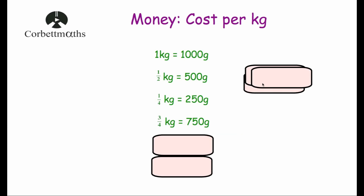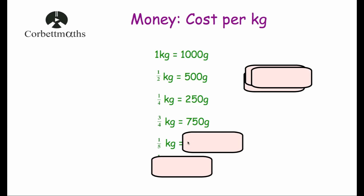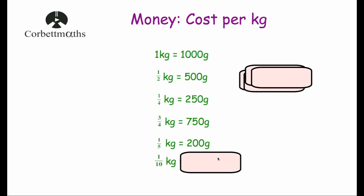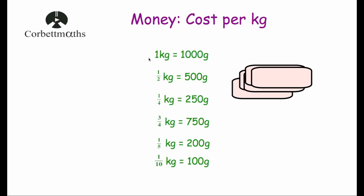Three quarters of a kilogram is 750 grams, which can be very useful. A fifth of a kilogram is 200 grams — a fifth of a thousand is 200. And a tenth of a kilogram is 100 grams. These facts are very useful in non-calculator questions, or even when you're in a shop and want to quickly work out the price of something from the cost per kilogram — for instance, working out two-fifths of the price if you're buying 400 grams.